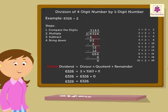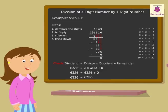It wasn't that tough to solve division of 3 and 4 digit numbers, was it?